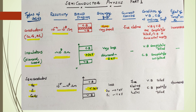Keep in mind: for germanium, the energy gap is around 0.7 electron volts, and for silicon it is 1.1 electron volts. For conductors, the charge carriers are free electrons. For insulators, no electrons are available in the conduction band. For semiconductors, the charge carriers are both electrons and holes.